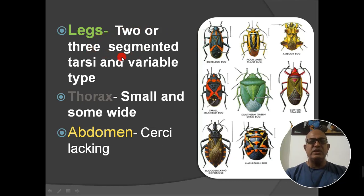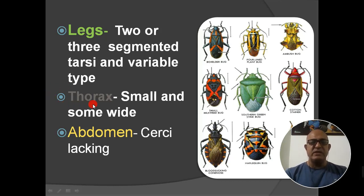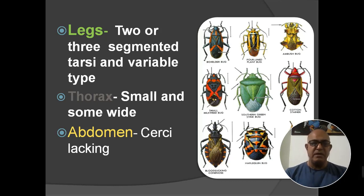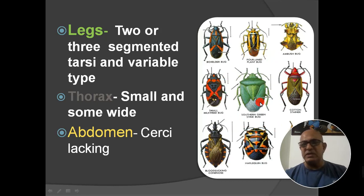Legs have two or three segmented tarsi, variable in different insects. Thorax is small but wide. In the abdomen, cerci are lacking — cerci are structures projecting from the posterior part of the abdomen and are absent in this order. Gonaphysis is also a main part. This order includes main insects such as bugs.